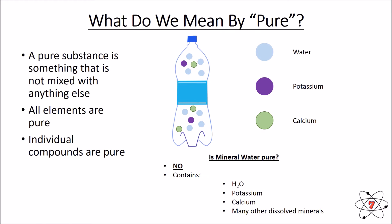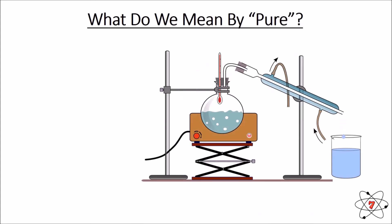If we look at this diagram, we can see a simplified version of why water is not pure. A bottle of mineral water contains water, potassium, and calcium — three different substances. It is not pure. Mineral water is what we call a mixture, which is when there is more than one type of substance that is not chemically joined together and not in a fixed ratio.